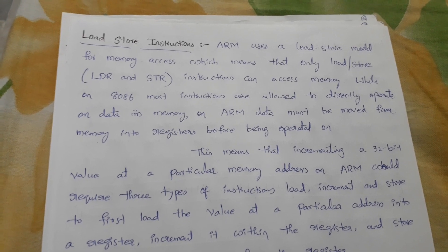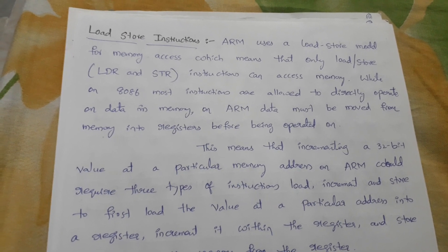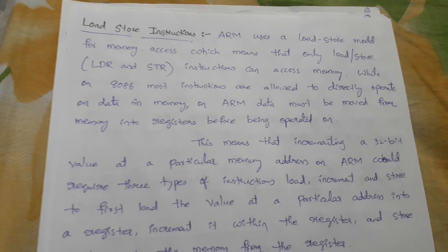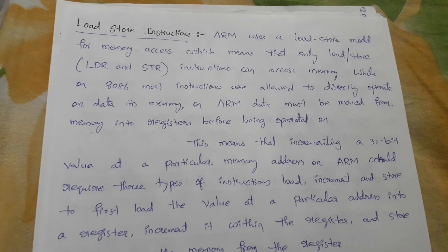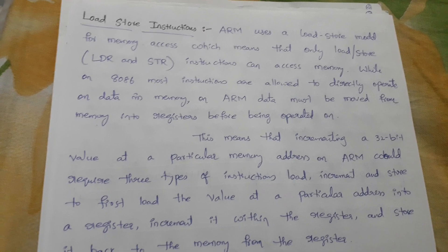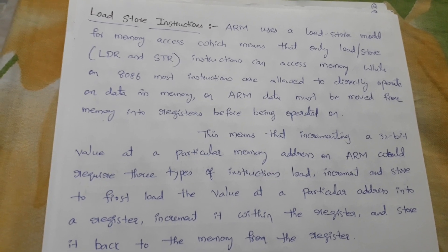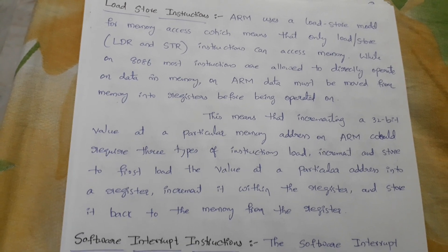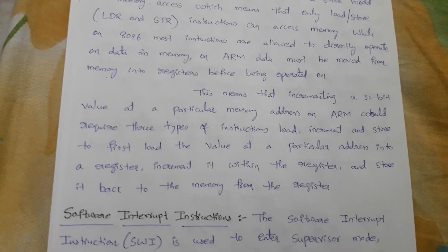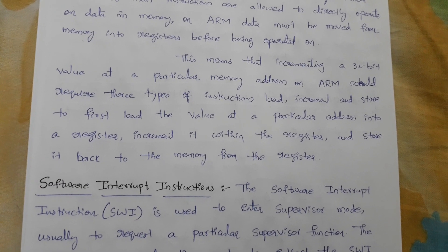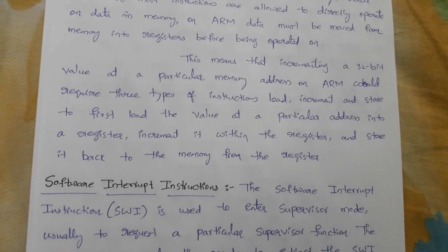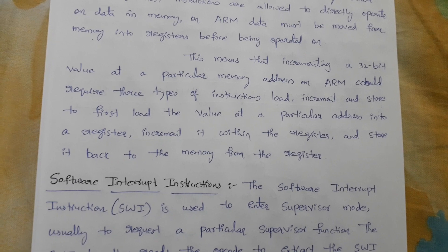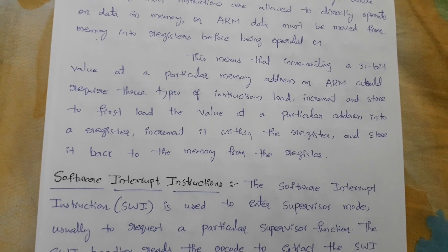In ARM, data must be moved from memory into a register before being operated on. So whereas in 8086 data is directly moved to memory, in ARM data is moved from memory to a register before being operated on. This means that to increment a 32-bit value at a particular memory address on ARM would require three types of instructions: load, increment, and store.